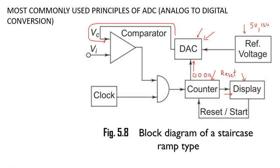Depending on the reference voltage, the DAC is going to convert this zero-zero-zero-zero into an analog value, which is given to the comparator. The second input of the comparator is Vi — the voltage you want to convert into a digital value and display. Initially, with zero-zero-zero at the counter, the DAC converts it into zero volts. Assuming Vi is greater than zero, Vi is slightly greater than zero.